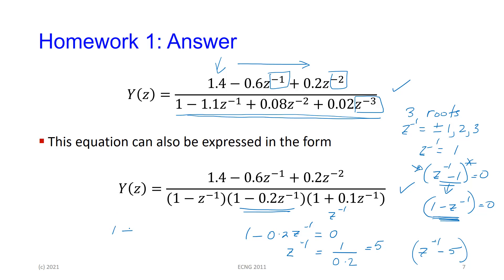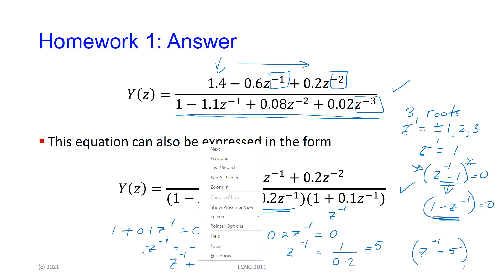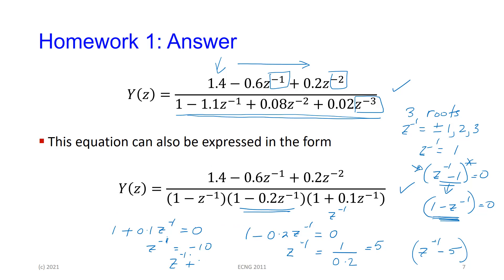If I tell you 1 plus 0.1 Z to the minus one is a factor, it means the root Z to the minus one is equal to minus 10. So the factor is Z to the minus one equal to minus 10, meaning Z plus 10 is a factor for that one.